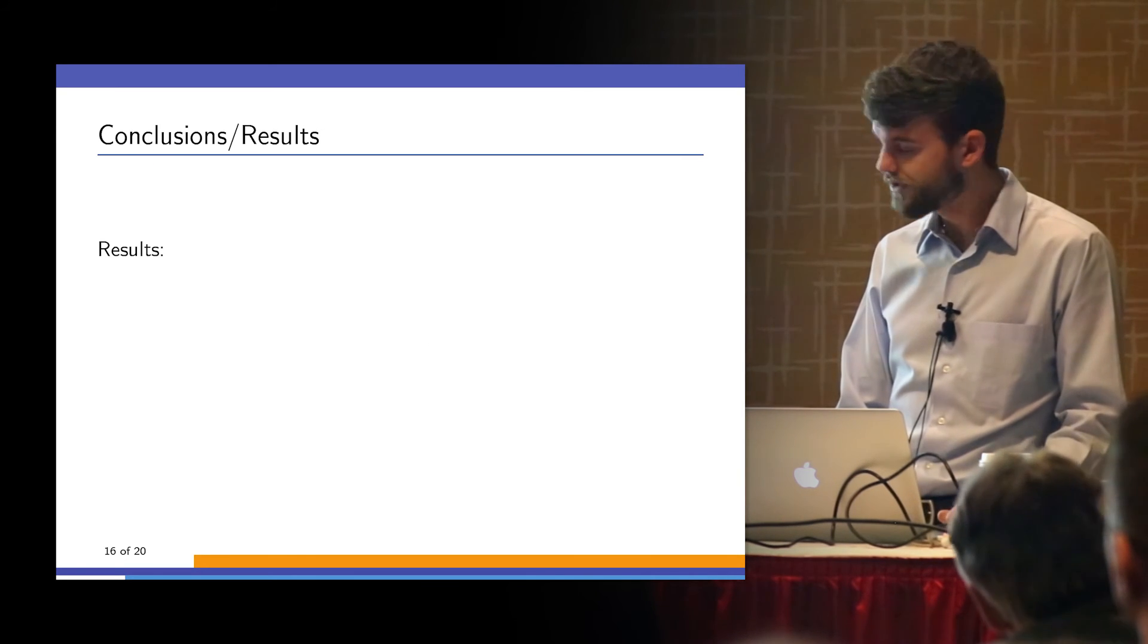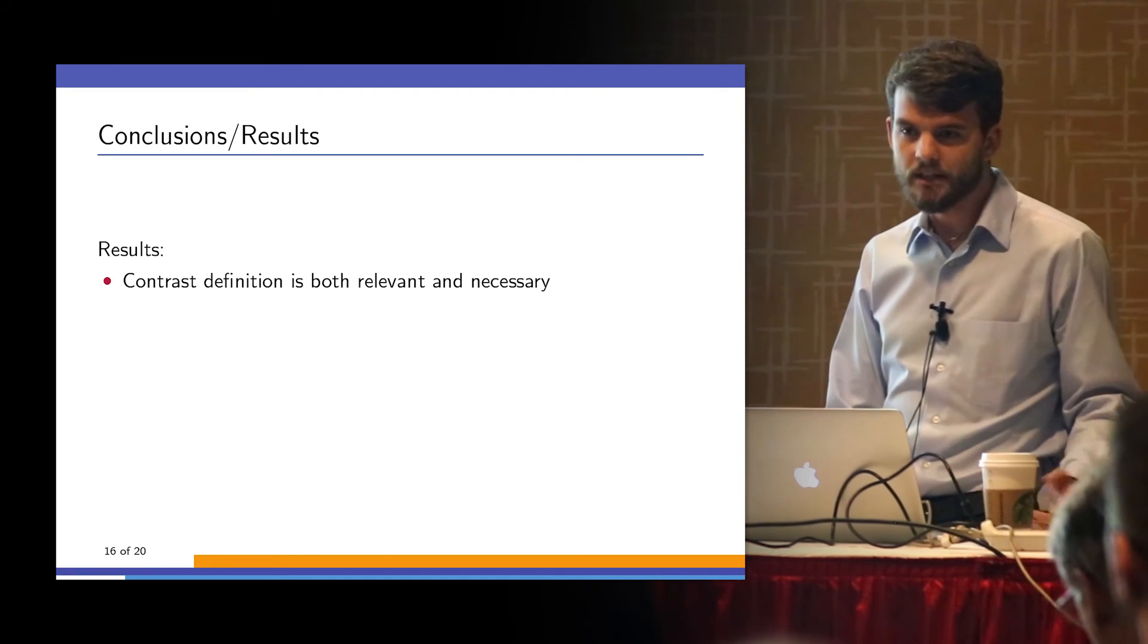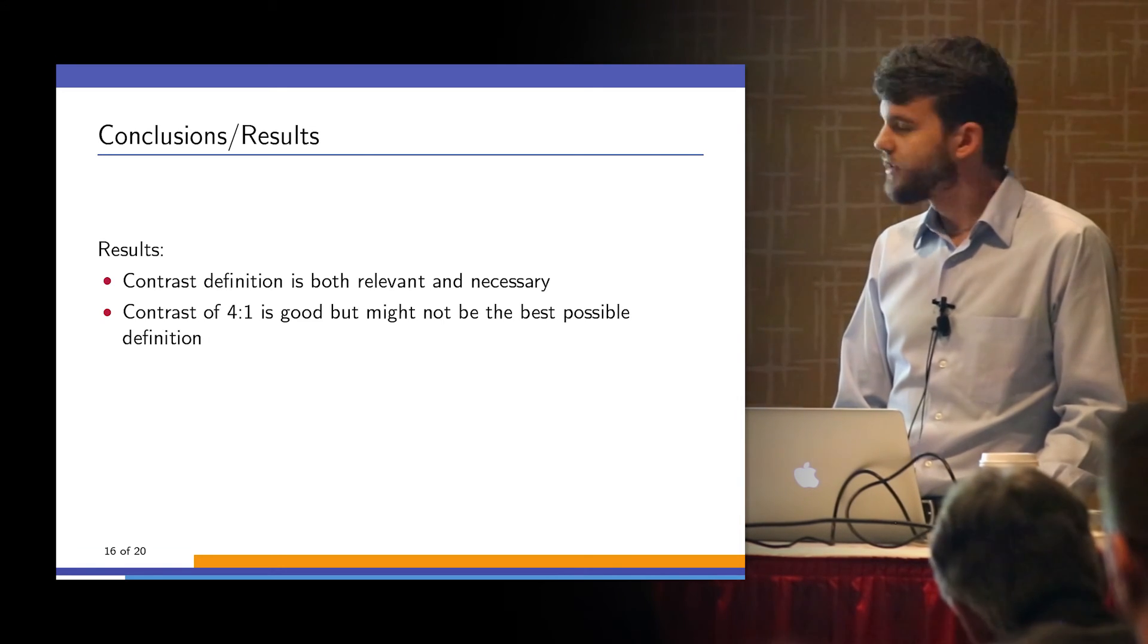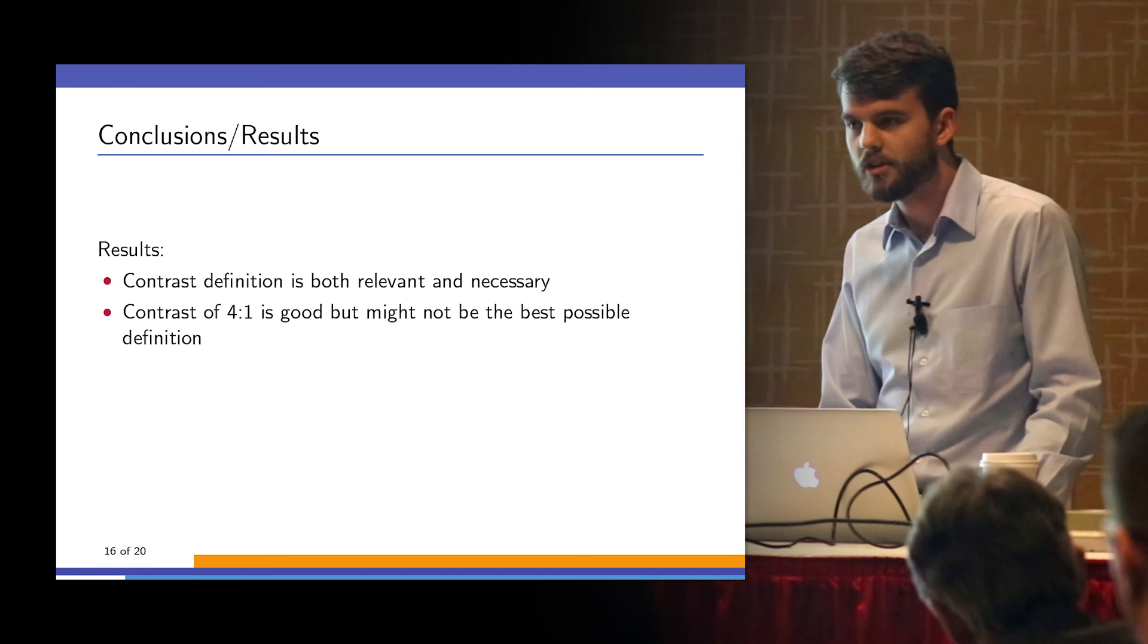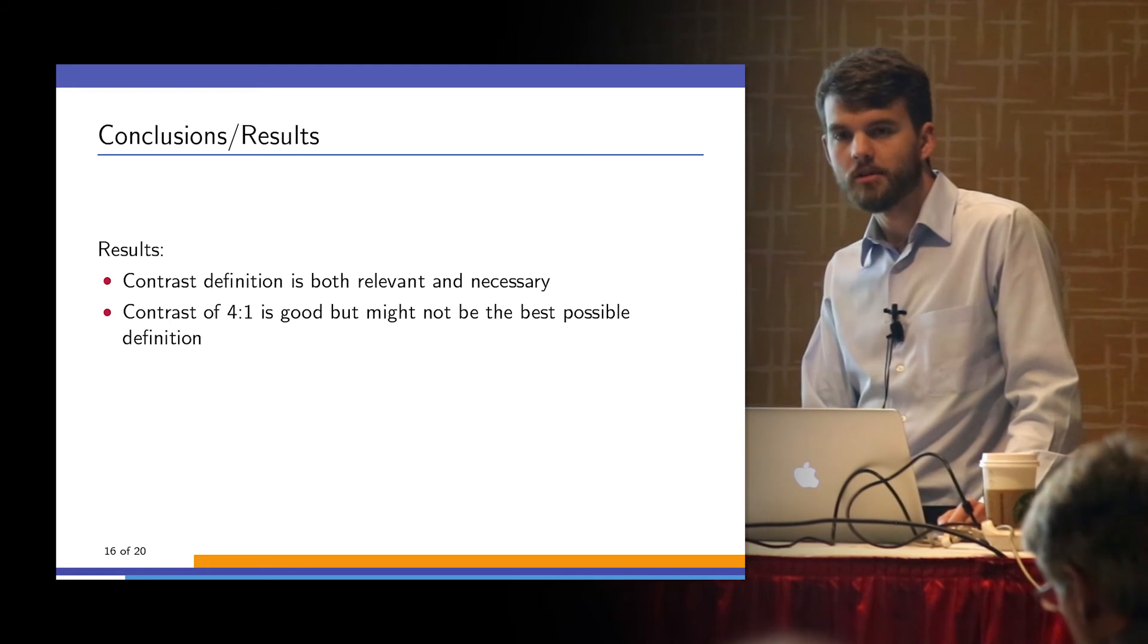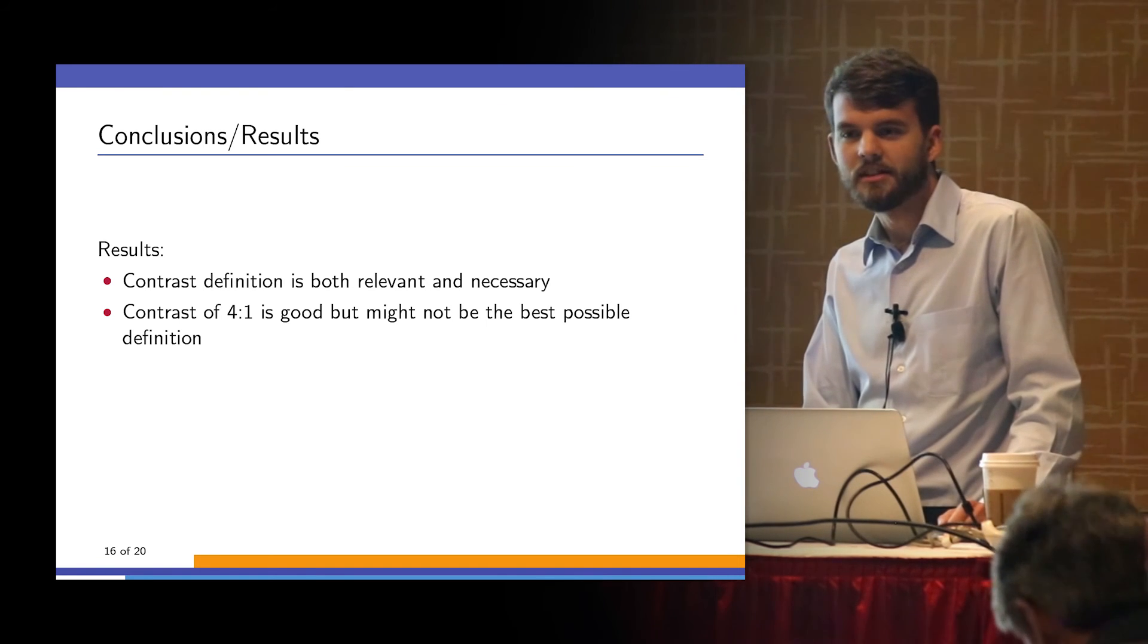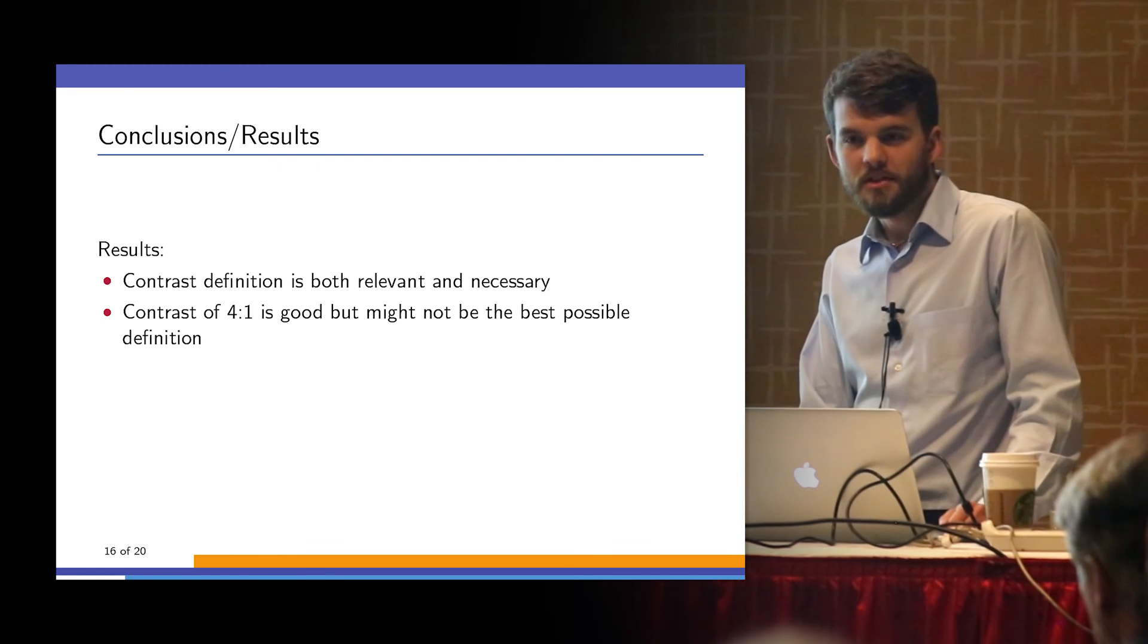We'll quickly go over conclusions. Contrast definition is relevant and necessary, even though mathematically it should not be. Noise is always a problem. Contrast of 4 to 1 is pretty good, but it may not be the best, especially when you consider the way that sharpening algorithms and image processing algorithms are applied. The previous speaker's work may end up relating to that. Different contrast levels and different frequencies are affected in different ways. Defining the contrast in relation to that may also be extremely important.